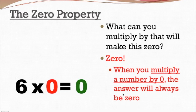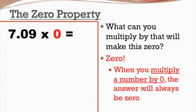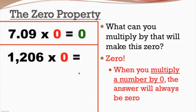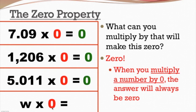And again, that applies to any number. For example, 7.09 times 0 — we're multiplying by 0, so the answer is just going to be 0. How about 1,206 times 0? Some students might get fooled because we have a bigger number, but it's all the same — it's just going to be 0, because any number times 0 is 0. How about 5.011 times 0? Again, it's times 0, so the answer is 0. And finally, how about w times 0? I've got a variable here, which can represent any number we want, but we're multiplying it by 0, so the answer is still going to be 0.